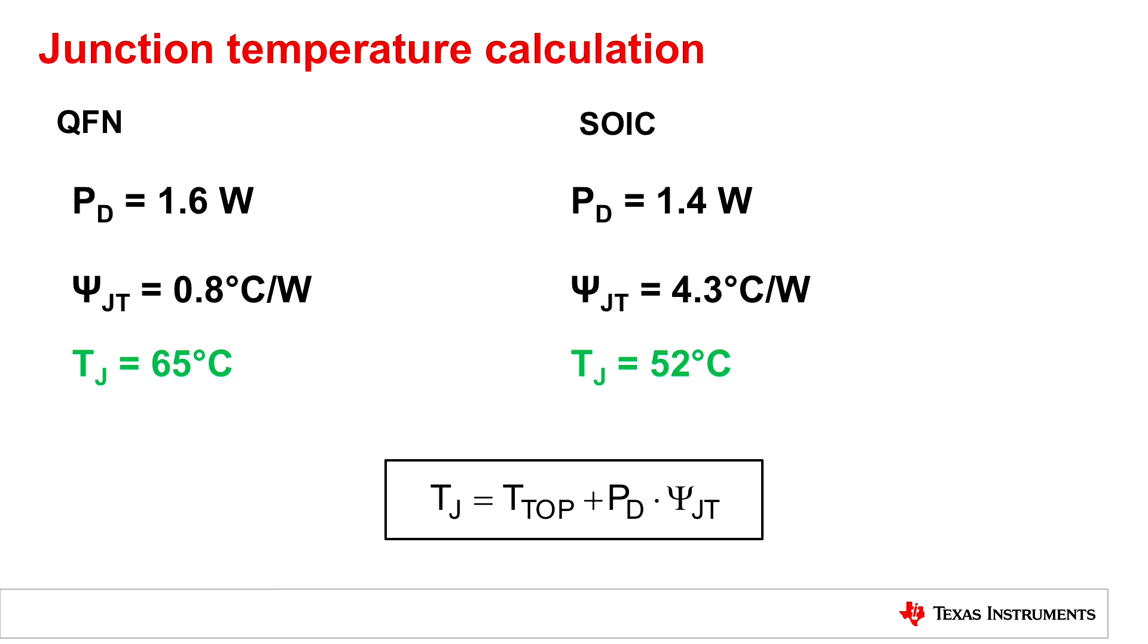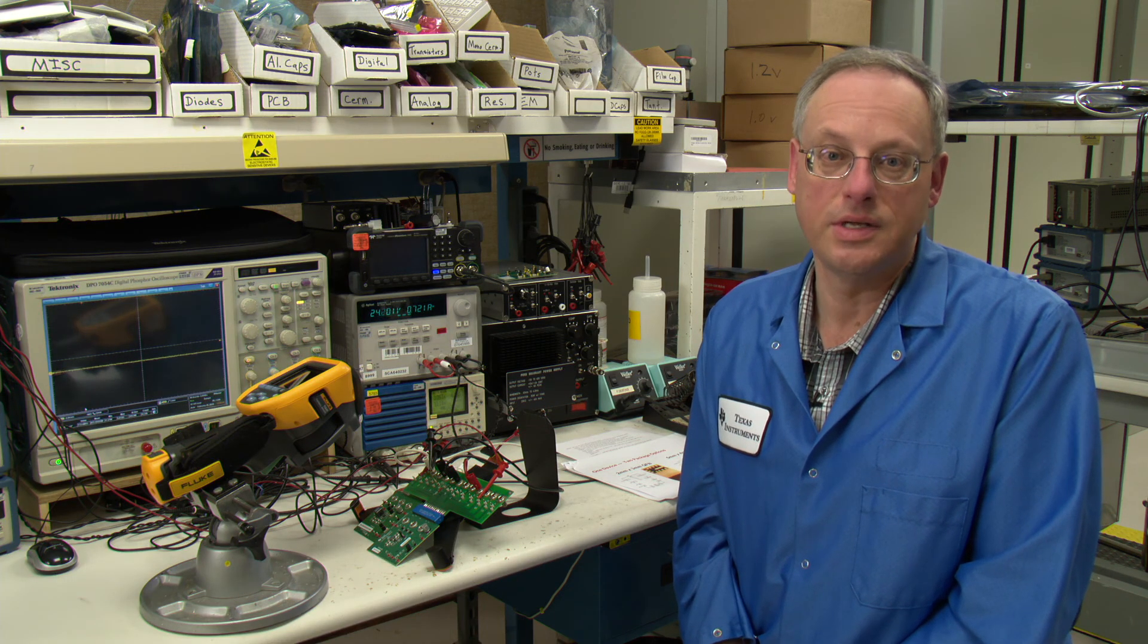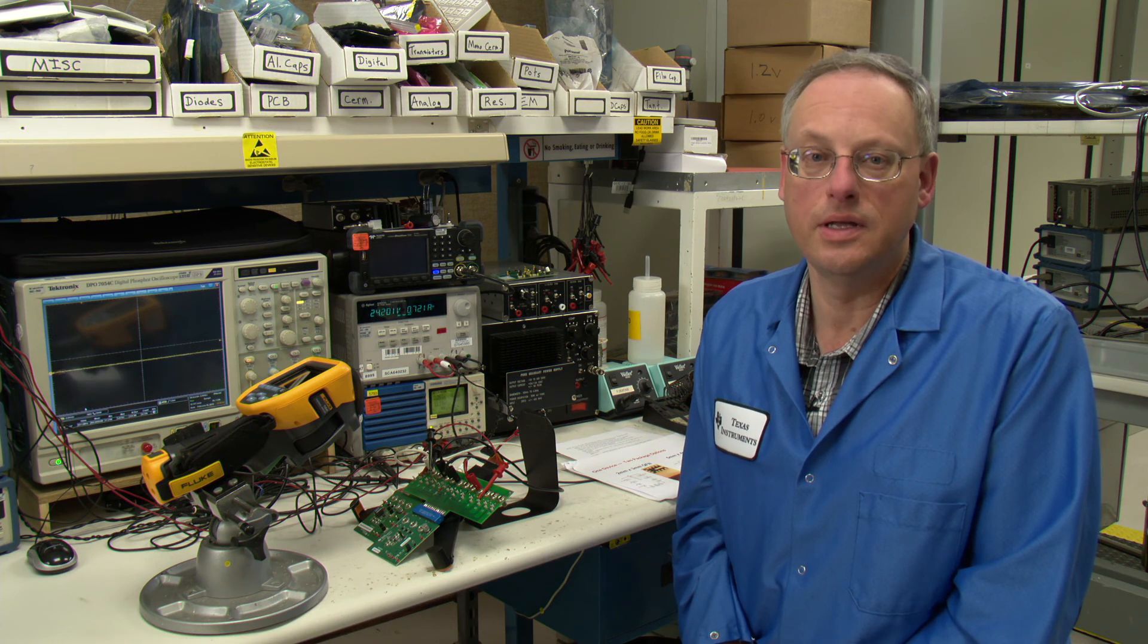So after making the calculation, we see that the QFN junction temperature is about 65 degrees C, whereas the SOIC junction temperature is about 52 degrees C. That's almost a 15 degree difference, and that can make quite a difference in many applications.